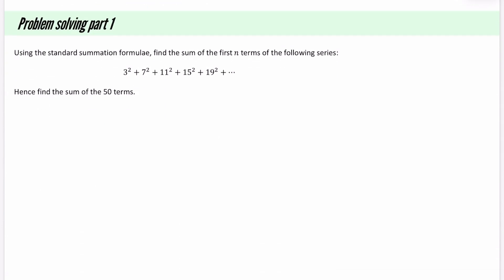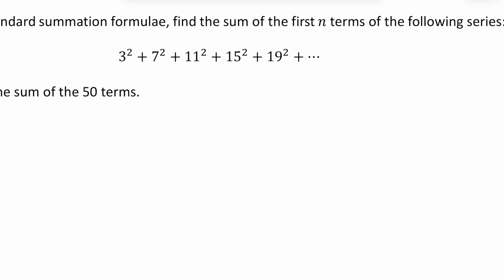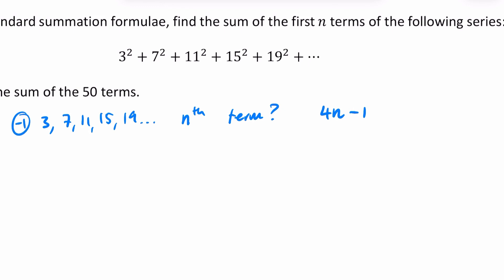The next question is a problem-solving one in two parts. We're going to use the standard summation formulae to find the sum of the first N terms of the series, then find the sum of the first 50 terms. It's not written in R language, so I'm going to ignore the squares for a second and go back to GCSE. I'll think about the sequence 3, 7, 11, 15, 19 and find the Nth term. It's going up in fours, so it would be 4N, and it's one less than the four times table, so it's 4N minus 1. Because they're all being squared, this means that (4N minus 1) squared gives us all of these terms.